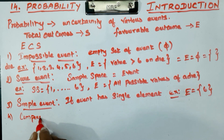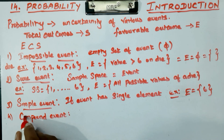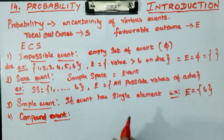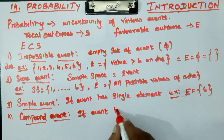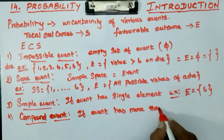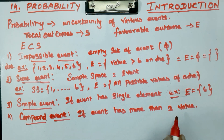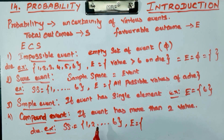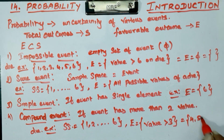Next is the compound event. A compound event has two or more values. For example, with a die the sample space is {1, 2, 3, 4, 5, 6}. If the event is values greater than 3, the event becomes {4, 5, 6} - which has more than one element, so it is a compound event.